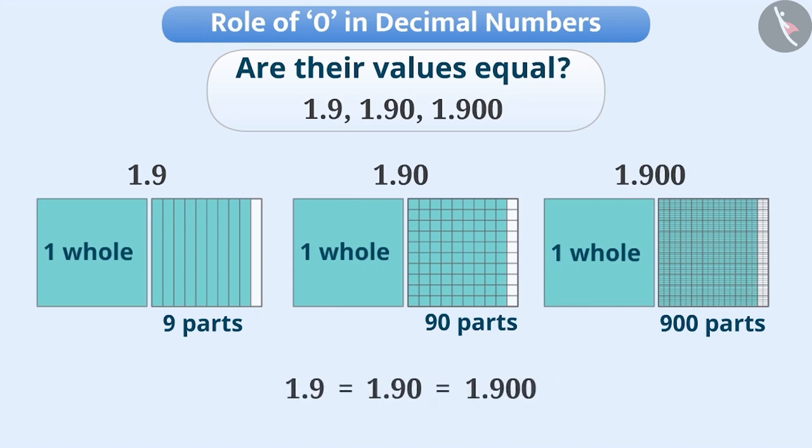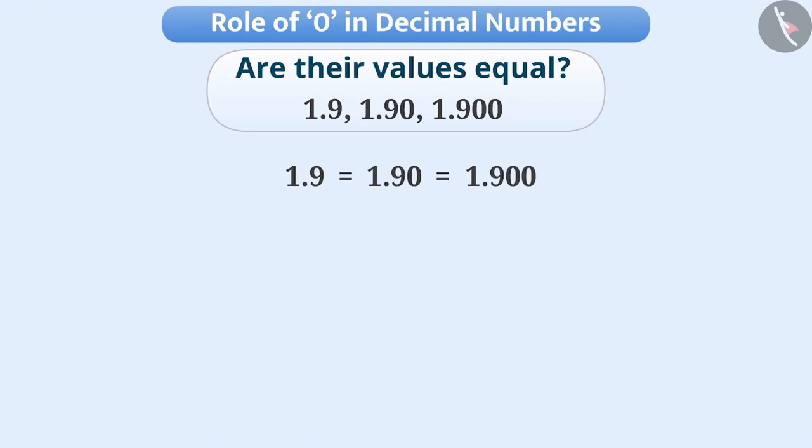Along with this, we can also say that by adding or removing any number of zeros at the end of decimal numbers, the value of number does not change.